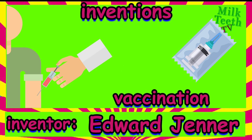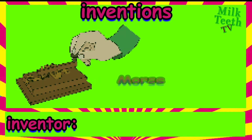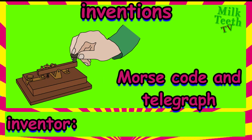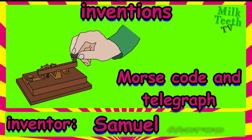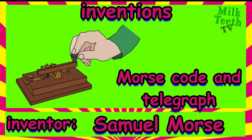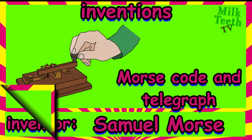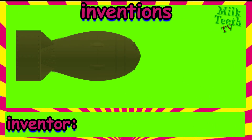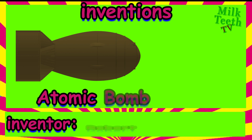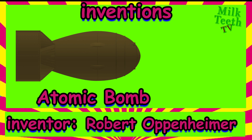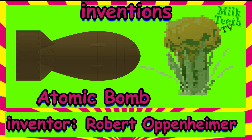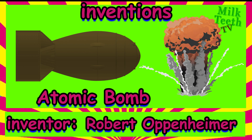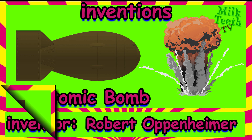This is a telegraph. It uses Morse code and was invented by Samuel Morse. It is the earliest way of communicating messages. This is the most dangerous thing in the world — an atomic bomb. It was invented by Robert Oppenheimer.